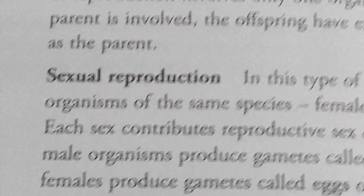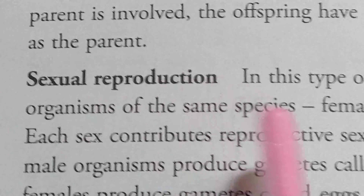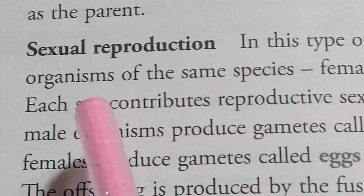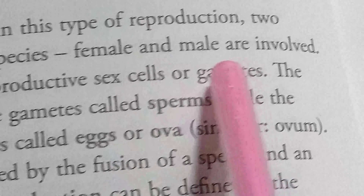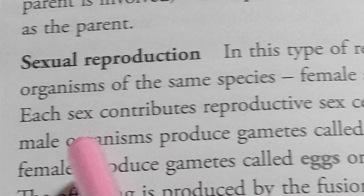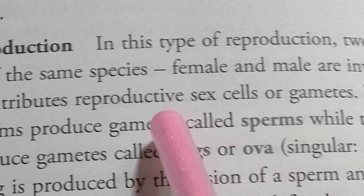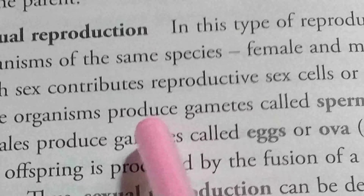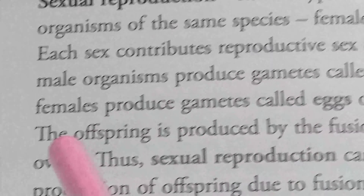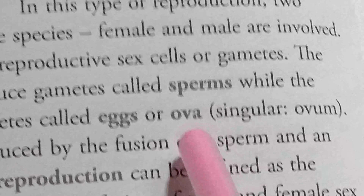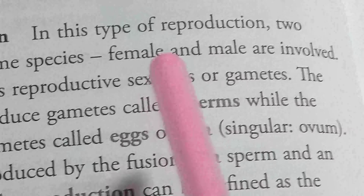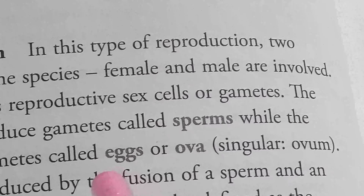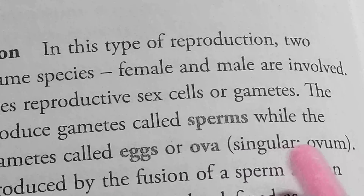In sexual reproduction, two organisms of the same species — female and male — are involved. Each sex contributes reproductive sex cells or gametes. The male organism produces gametes called sperm, while the female produces gametes called eggs, or ova or ovum.